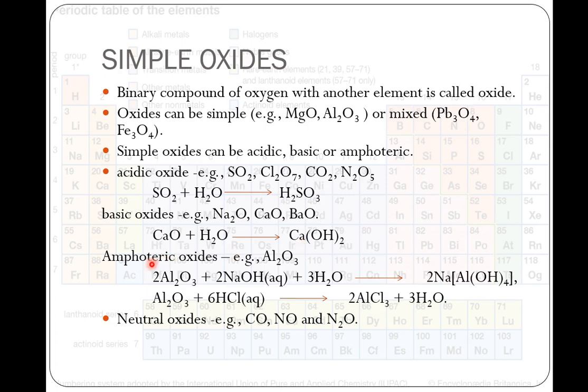Amphoteric oxides are those which have dual behavior. They can react both with alkali as well as with acid. Like aluminum oxide reacts with alkali to form sodium aluminate and also reacts with HCl to form aluminum chloride.